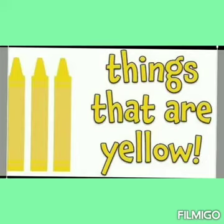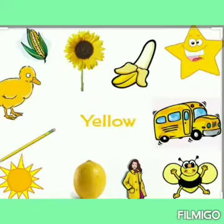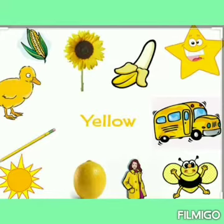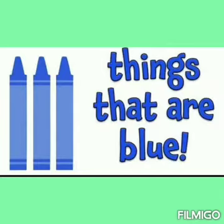The second color is yellow. We will study what yellow is and what things are in yellow color. The yellow things are sunflower, banana, star, bus, butterfly. Lime is also yellow, sun, pencil is in yellow color, and dark is also yellow color.